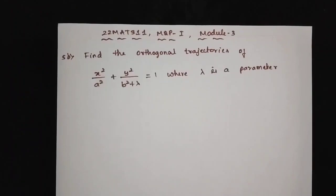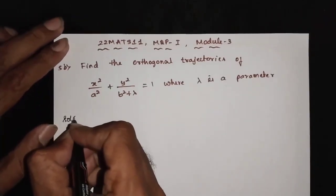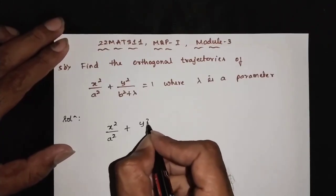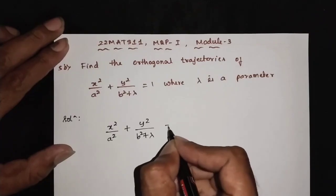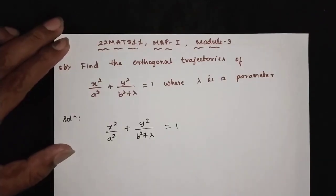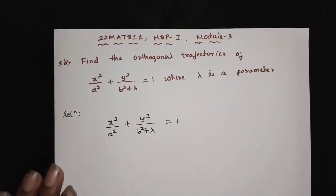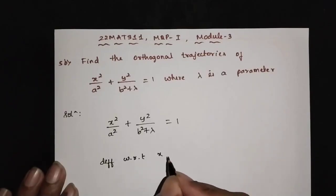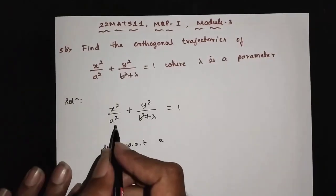Question 5: Find the orthogonal trajectory of x squared by a squared plus y squared by b squared plus lambda equals 1, where lambda is a parameter. First, work on x squared by b squared plus y squared by b squared plus lambda equals 1, and differentiate with respect to x.